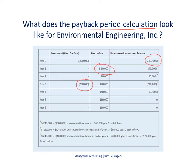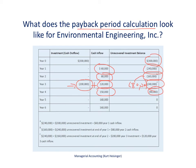In year one, $60,000 came back in, leaving an unrecovered balance of $240,000. Then another $80,000 came in, reducing the balance to $160,000. But we invest $200,000 in a remodel, so taking negative $200,000 plus $120,000 gives a net cash outflow of $80,000. Adding that to the $160,000 balance brings the unrecovered balance up to $240,000. In year four, $150,000 comes in, reducing the unrecovered balance to $90,000 — meaning our investment will be fully recovered sometime during year five.